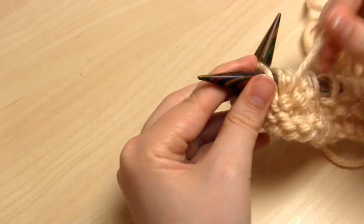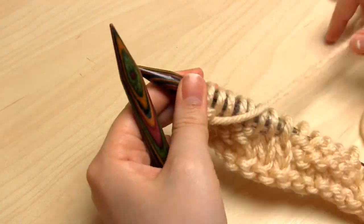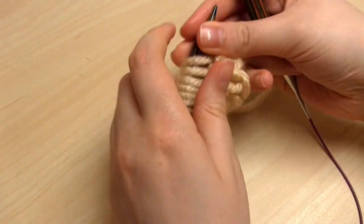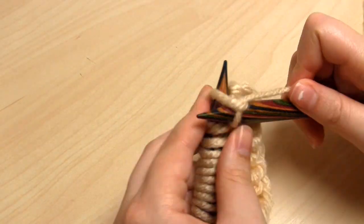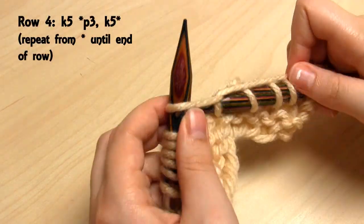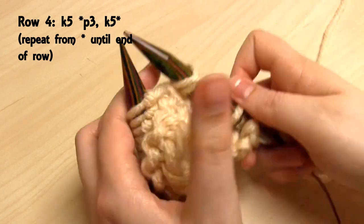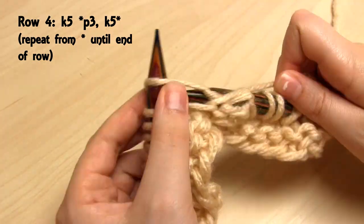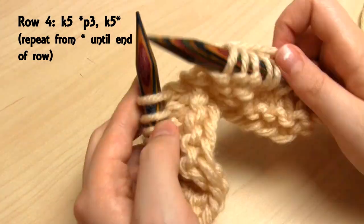And now we're on to row 4, which is exactly the same as row 2. So once again we start with 5 knit stitches. Then we do 3 purl stitches, 5 knit stitches, 3 purl stitches, 5 knit stitches, until the end of the row.